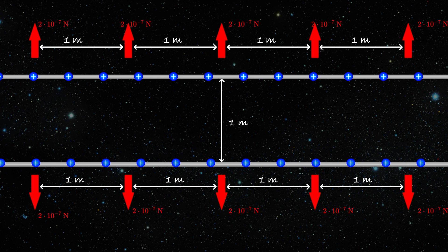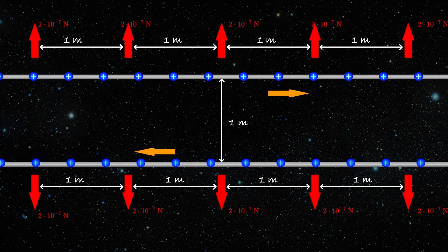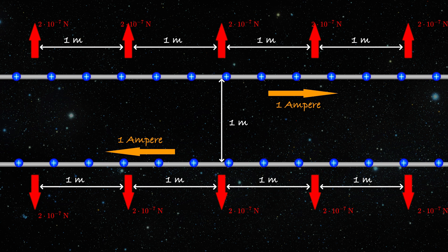And you can measure this force. And the definition people came up with is the following: Take two infinite parallel wires with negligible cross-section, set them one meter apart, and the force of two times ten to the minus seven newtons per meter of length means there is one ampere of current in each wire.